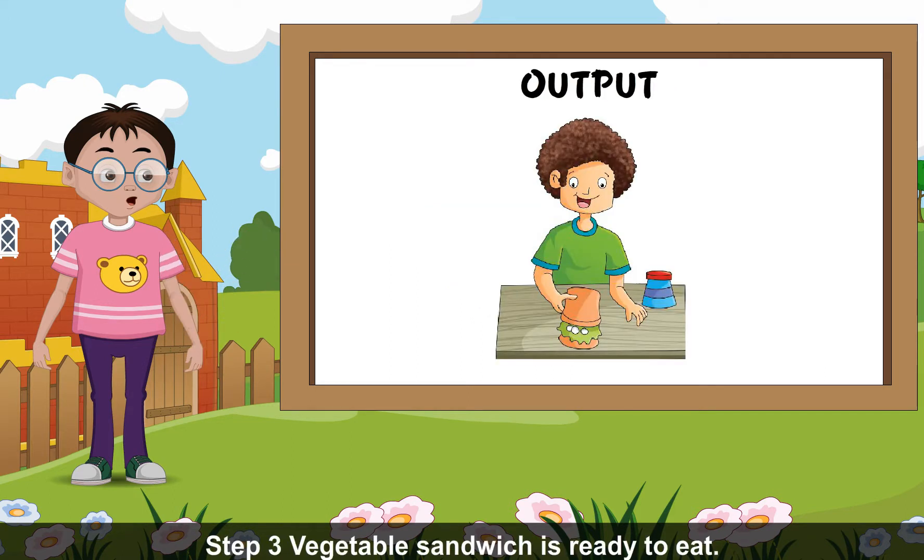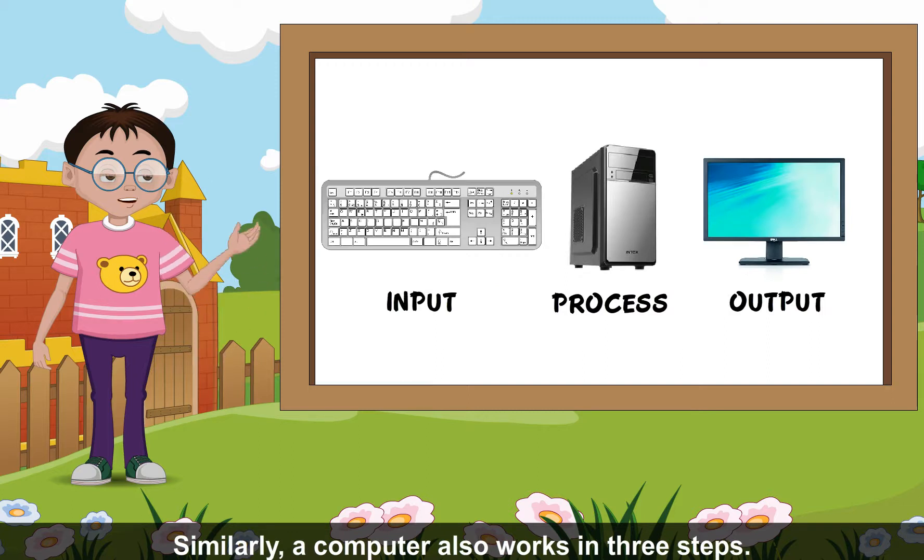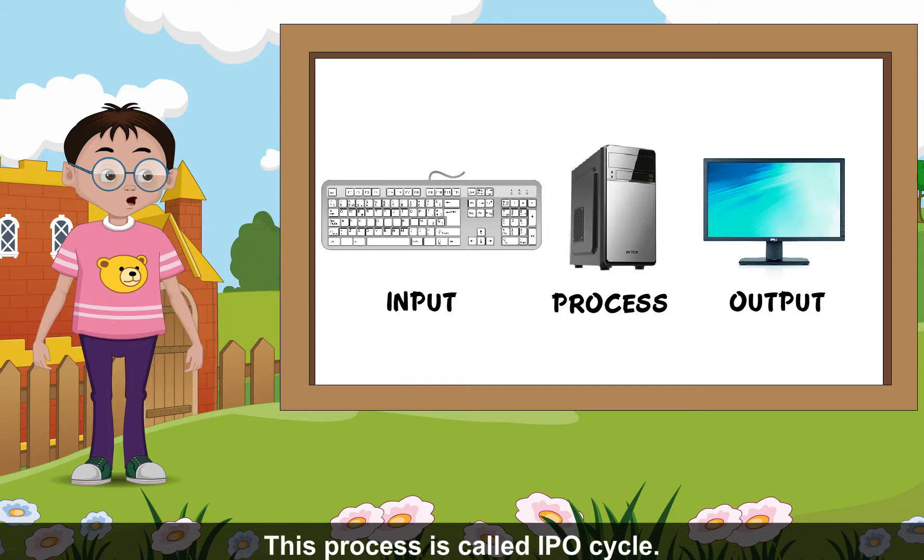Output, Step 3: Vegetable sandwich is ready to eat. Similarly, a computer also works in three steps. This process is called IPO cycle: Input, Process, Output.